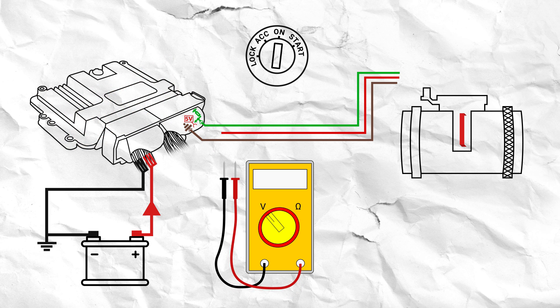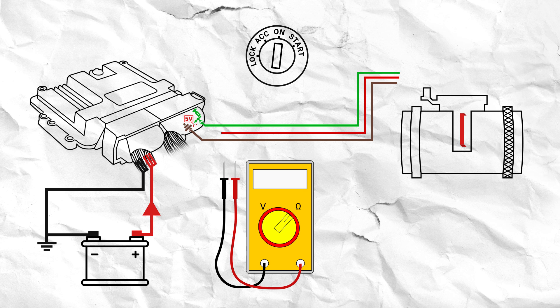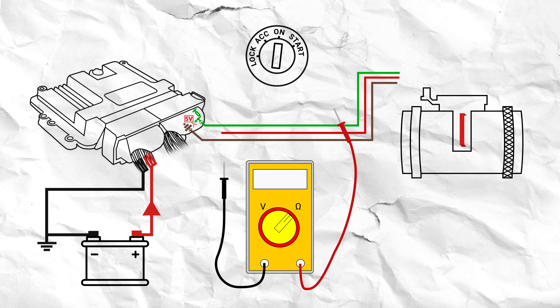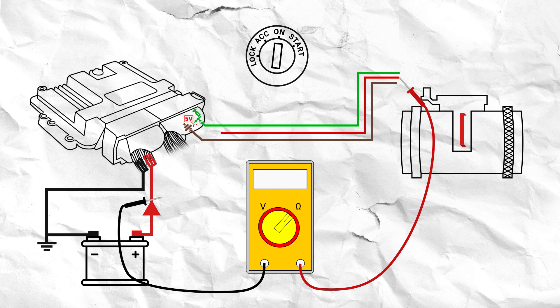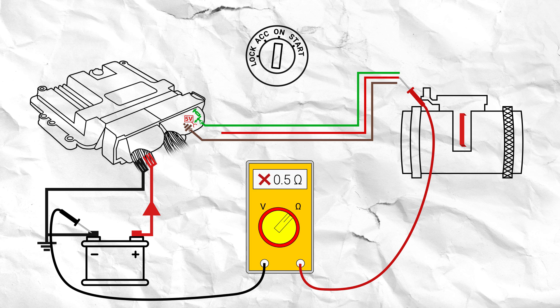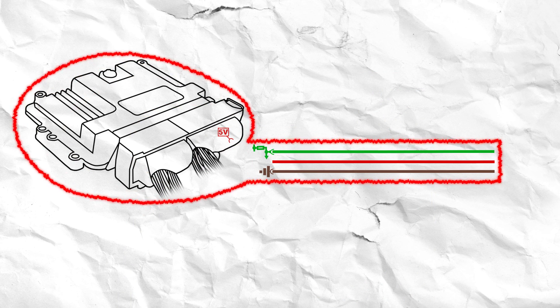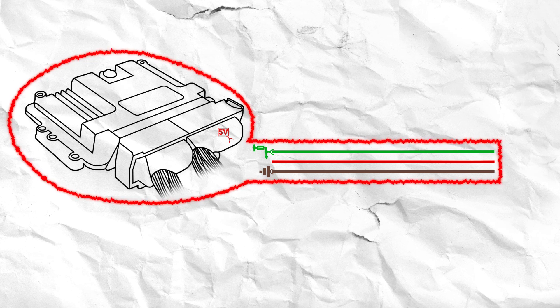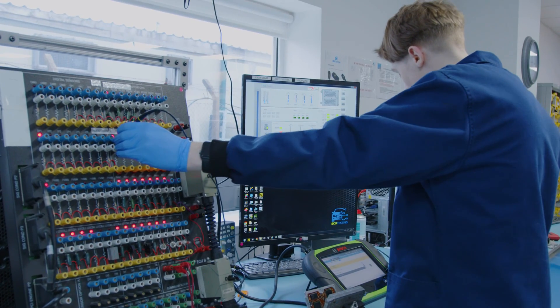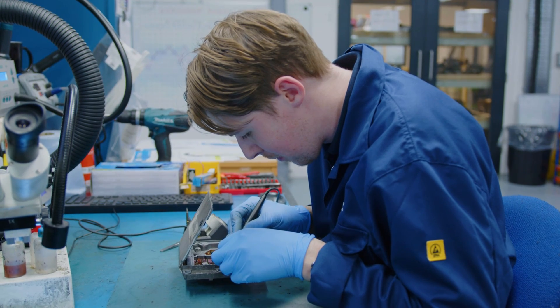To confirm the bad reading is only within the ECU, complete a continuity test between the affected terminal at the sensor connector and battery negative. If any continuity is displayed here, then there is a fault within the wiring loom which has in turn caused damage to the ECU. If this is the case, then both the loom and ECU will need repairing. Click here to get yours remanufactured today.